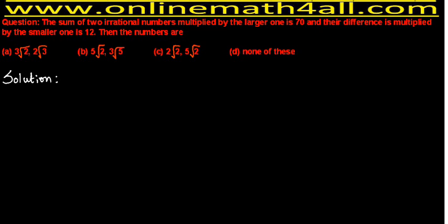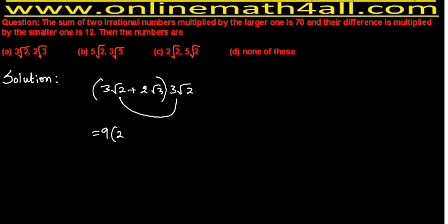In Option A we have two irrational numbers: 3√2 and 2√3. Applying the given information — the sum of two irrational numbers multiplied by the larger one — I first find the sum of the two irrational numbers. Then this sum is multiplied by the larger one. I'm not sure which is larger — whether 3√2 or 2√3 — so I'll assume 3√2 is larger.